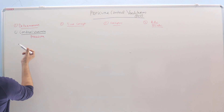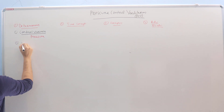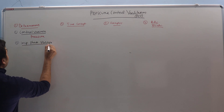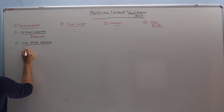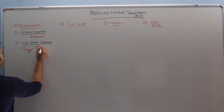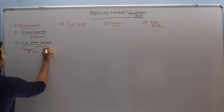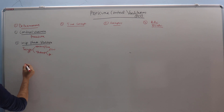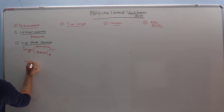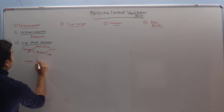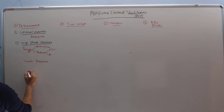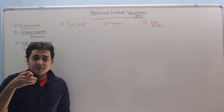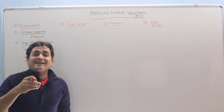The second heading will be Inspiratory Phase Variable and this will again be three types. First is Trigger — either machine, time, or patient, which can be flow trigger or pressure trigger. Second will be Limit — Pressure Control Ventilation will be pressure limited. And then Cycle — it will be time cycled, meaning we will set the Inspiratory Time and as soon as the time is over, the ventilator will cycle from Inspiration to Exhalation.